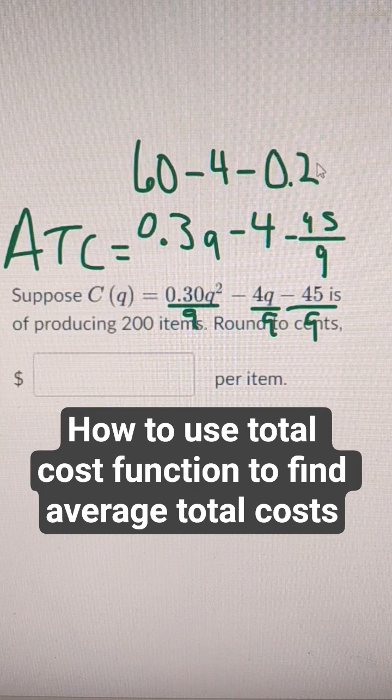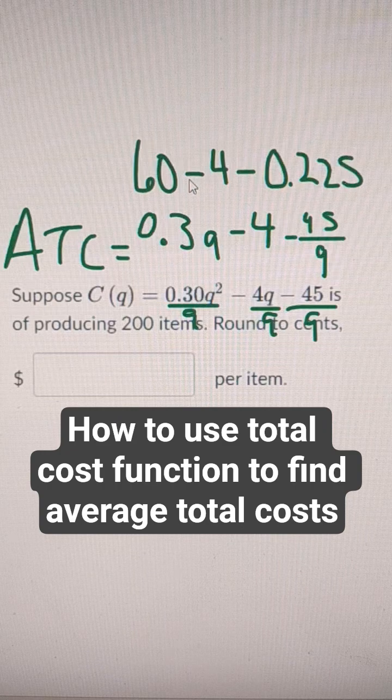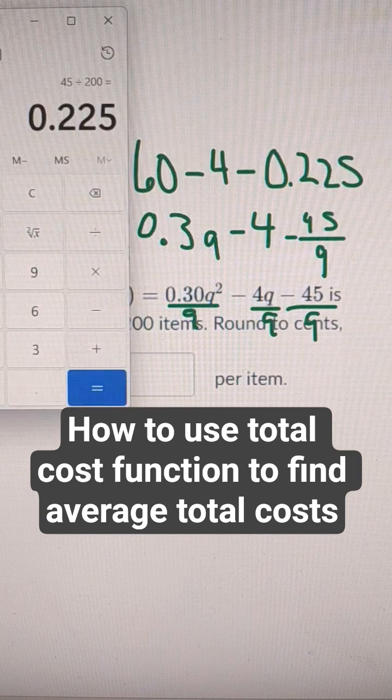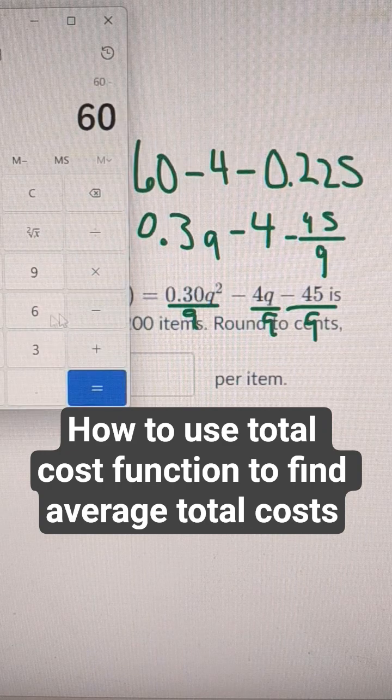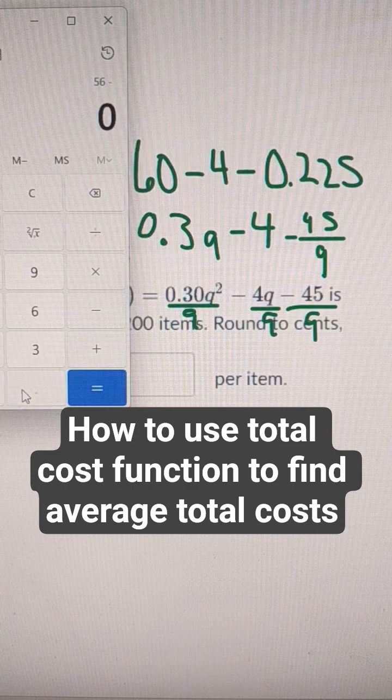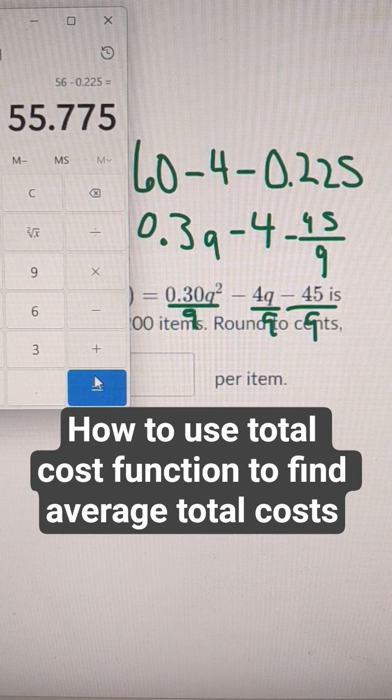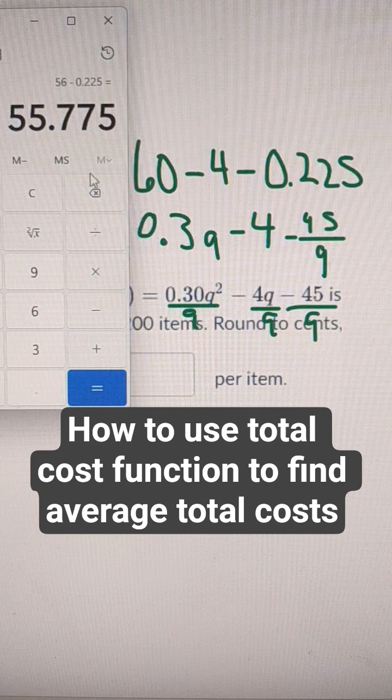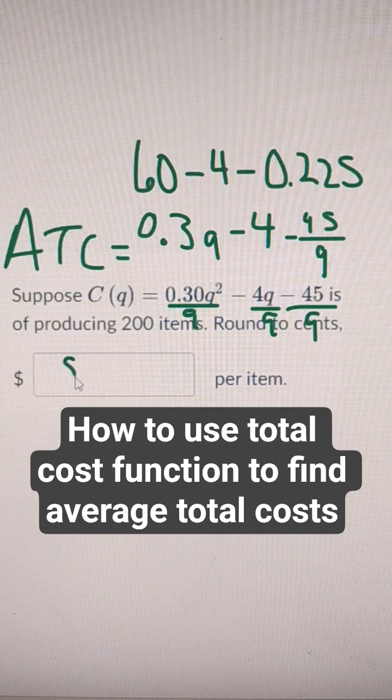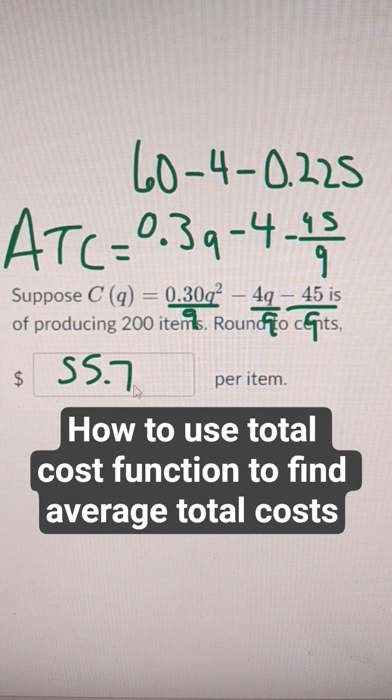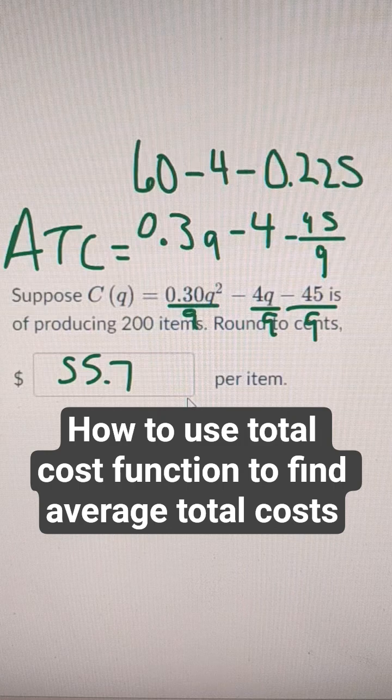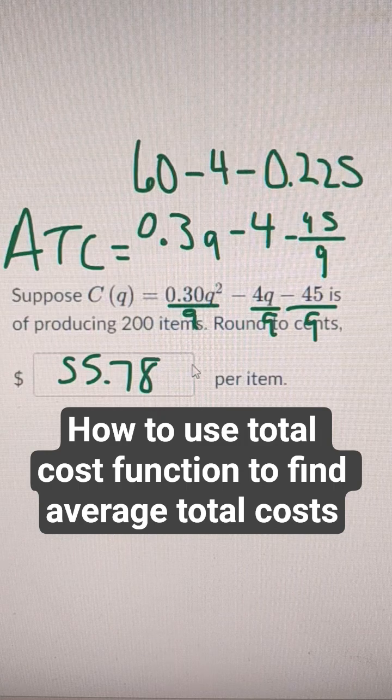And so I got 60 minus 4 minus 0.225, and we get $55 and 77, $55 and 70. If we round that, it would be 78 cents.